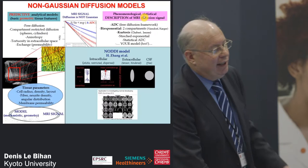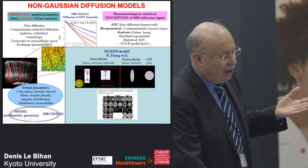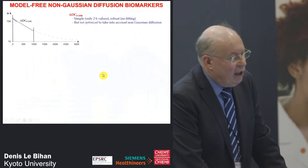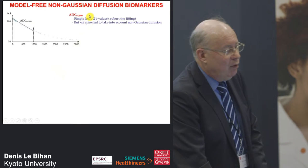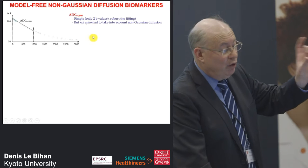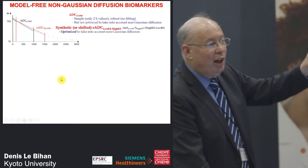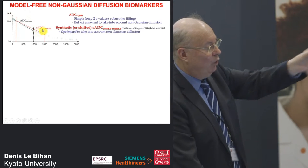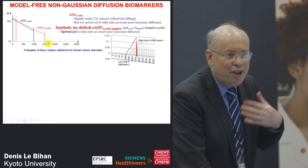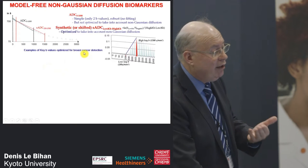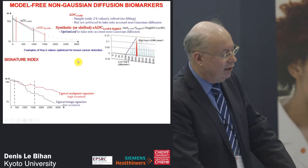Another avenue is to be simple. The ADC is extremely successful clinically — just two B-values — but doesn't capture high B-value information. A very naive view is to shift the ADC window: instead of 0-1000 you go to, say, 200-1500. This very simple idea works incredibly well because you capture more non-Gaussian diffusion — more interaction of water molecules with membranes — and especially for cancer this is quite important. You can identify B-values optimized to give the highest sensitivity to disease.